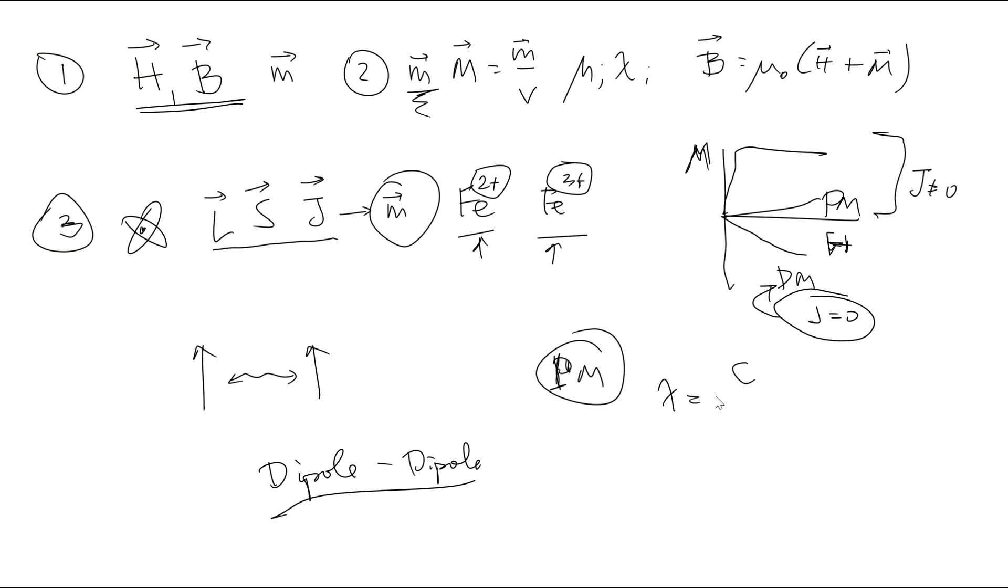For paramagnets, susceptibility can be written down in Curie-Weiss law. This is the Curie temperature theta. Chi is inversely proportional but it goes up at Curie temperature. If you calculate the energy required, this is the Boltzmann energy required to break the ordering.